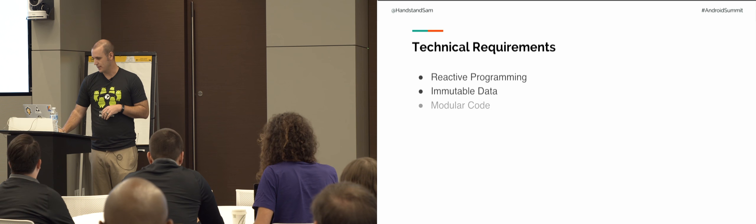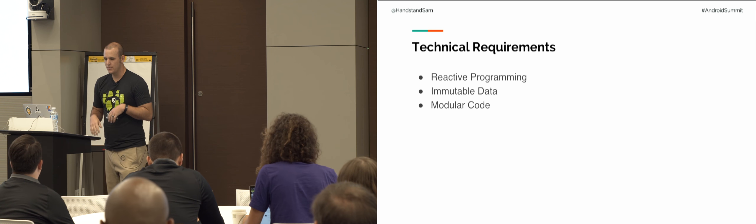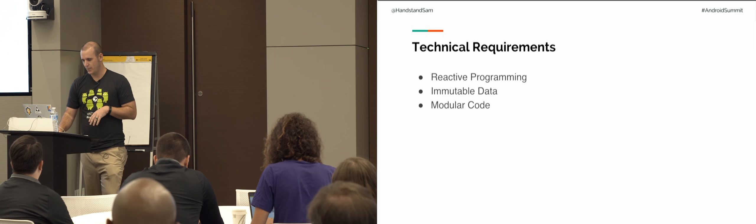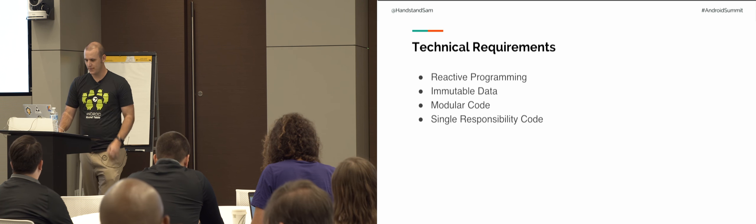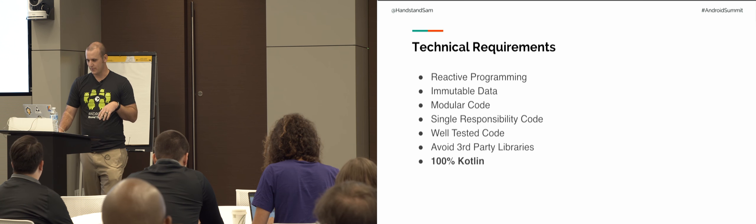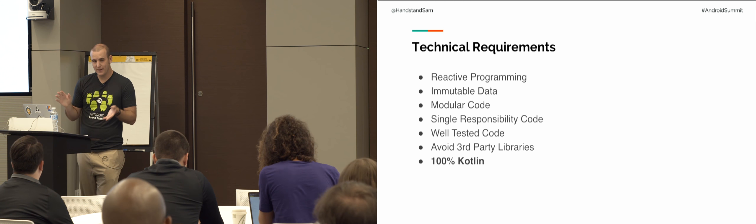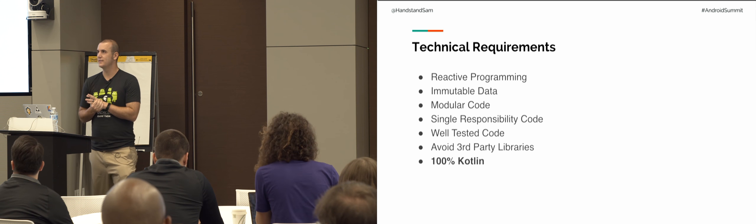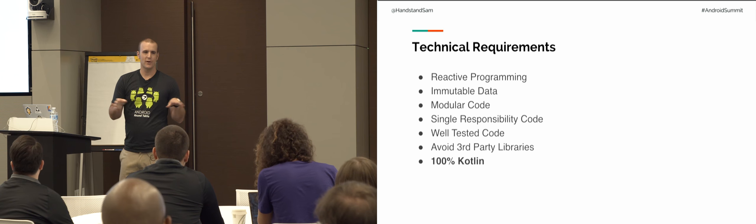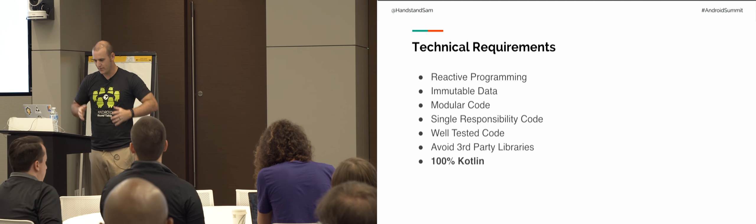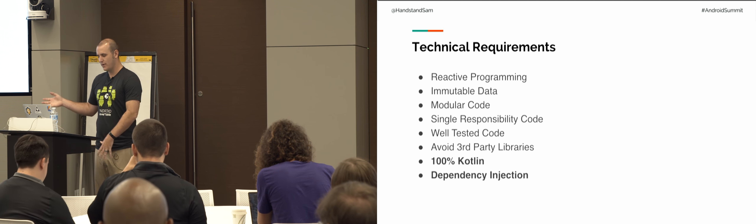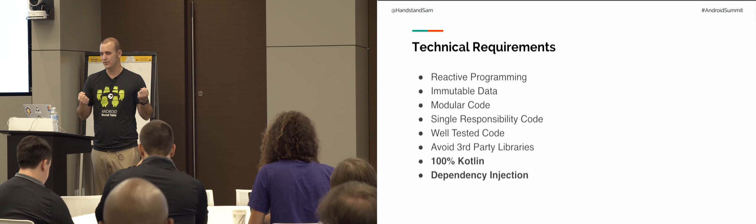We wanted modular code — the ability to write small modules that had a single purpose. Same thing with single responsibility code. Well-tested code — we're big about testing — and avoid third-party libraries like we're talking about. And one more thing: 100% Kotlin, because we started this SDK about a year and a half ago. Google had already announced it was a supported language. We said we're going to do 100% Kotlin, and along with the other requirements, we still wanted dependency injection.